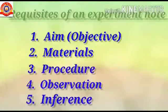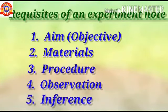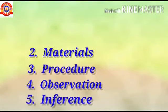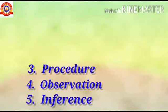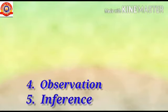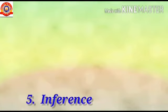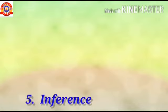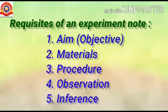My dear students, you must write this experiment note in your notebook. To write any experiment note, we must write five steps. First step: aim — write your question. Second: materials required — write what things you need for this experiment. Third: procedure — write the method of the experiment. Fourth: observation — write what we have seen in this experiment. Fifth and last: inference — write our finding, which is the result of the experiment. I have already prepared one experiment note for you. Today I will send it with your notes. Copy that into your notebook.